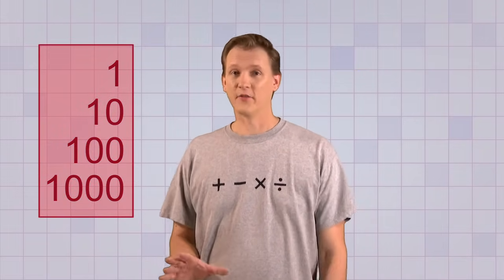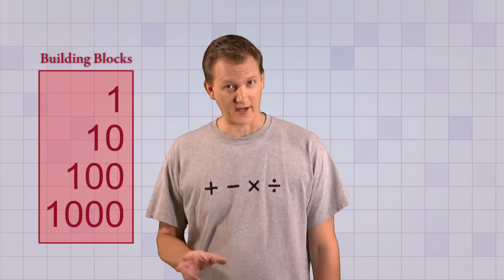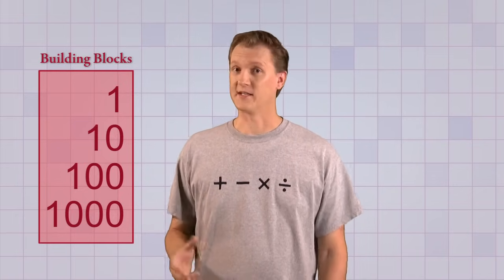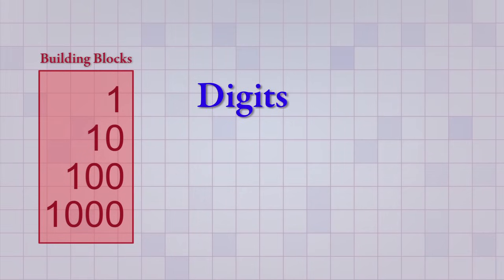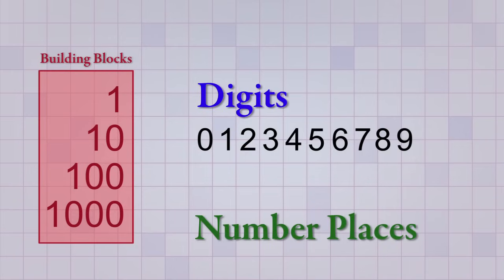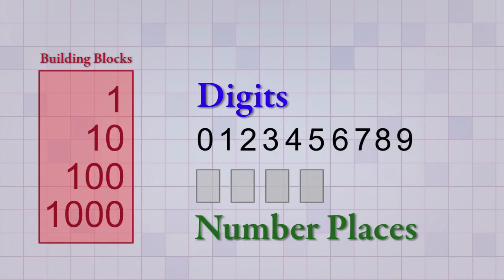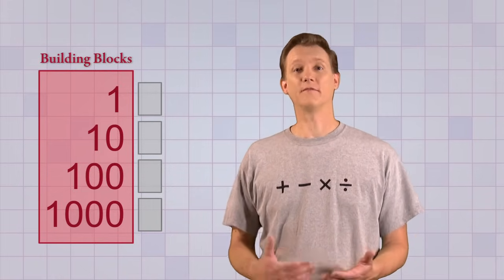So what am I going to do with all these powers of 10? They're the building blocks of our counting system, so I'm going to count with them. But before I do that, I should mention two more things that our number system needs besides these building blocks: digits and number places. Digits are just the 10 different symbols we use for counting — 0, 1, 2, 3, 4, 5, 6, 7, 8, and 9. Number places are like little imaginary boxes that can hold just one digit at a time, and they're used like counters to count things. We use one number place for each of our building blocks to count how many of each of them we have.